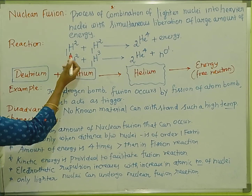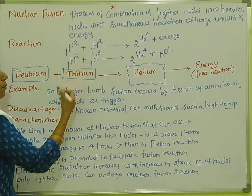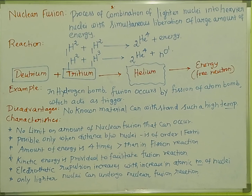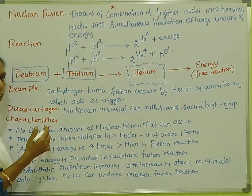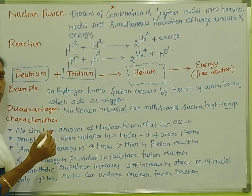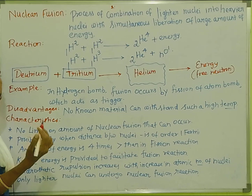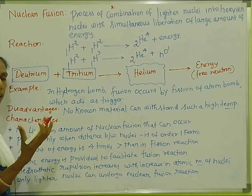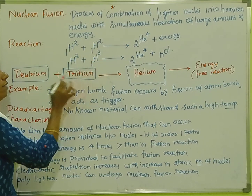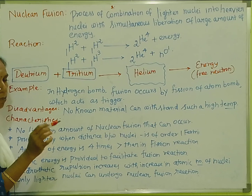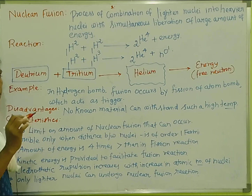We can use high temperature to overcome repulsion. For example, the sun contains hydrogen and helium at about 100 million degrees centigrade. Such a high temperature enables fusion. This is why this reaction is called a thermonuclear reaction — 'thermo' meaning heat.